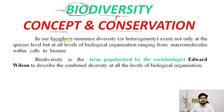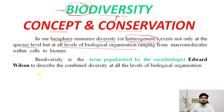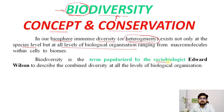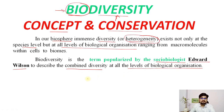In our biosphere, there is immense diversity or heterogeneity — differences and variety — that exists not only at the species level, but at all levels of biological organization: from the molecule, cell level, and gene level to the ecosystem level. Biodiversity is a term popularized by sociobiologist Edward Wilson to describe the combined diversity at all levels of biological organization.